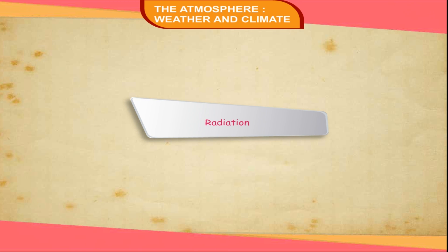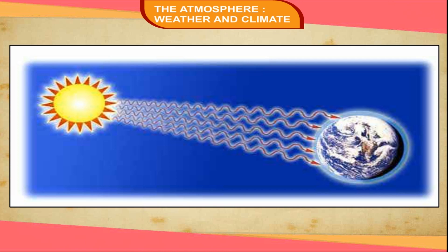Radiation. Radiation is the direct heating of an object by the transmission of heat waves. The atmosphere absorbs very little of the incoming solar radiation, but absorbs heat radiated from the earth's surface, which is called terrestrial radiation.